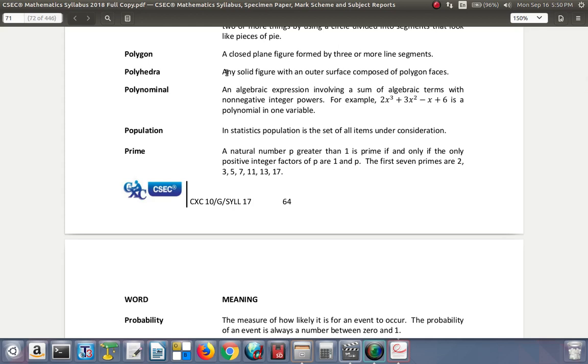Polyhedra. Any solid figure with an outer surface composed of polygon faces. Polynomial. An algebraic expression involving a sum of algebraic terms with non-negative integer powers. For example, 2x cubed plus 3x squared minus x plus 6 is a polynomial in one variable. That means if you had 2x to the negative 2, it would not be a polynomial. If you have 2x to the negative 3, that would not be a polynomial. Because here it says, non-negative integer powers.